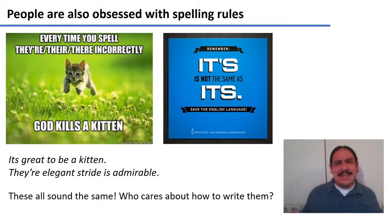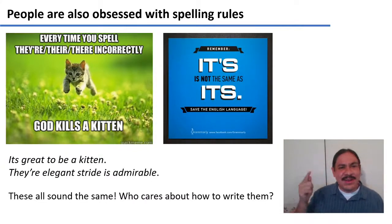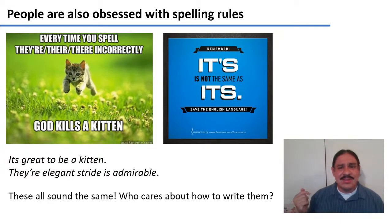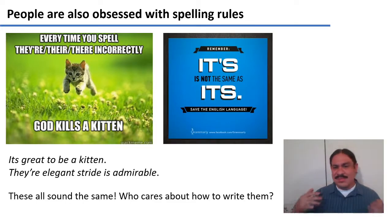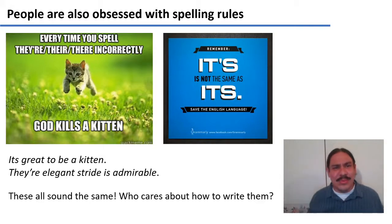People are obsessed with the tiniest, nitpickiest things, like having the apostrophes in 'there,' 'their,' and 'they're' — which is weird, because all of them sound the same. Why would anyone care about an apostrophe being there or not? Or something like 'its' versus 'it's,' as in 'it's great to be a kitten.' Who has the time to care about whether an apostrophe is there or not, particularly one that makes no sound — it sounds the same with or without it.